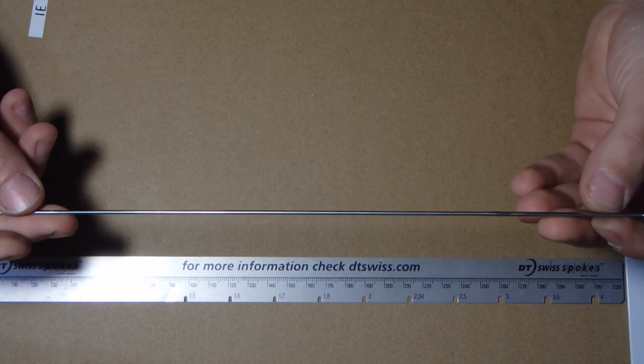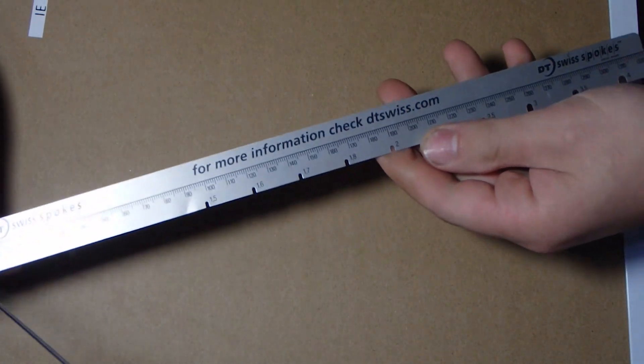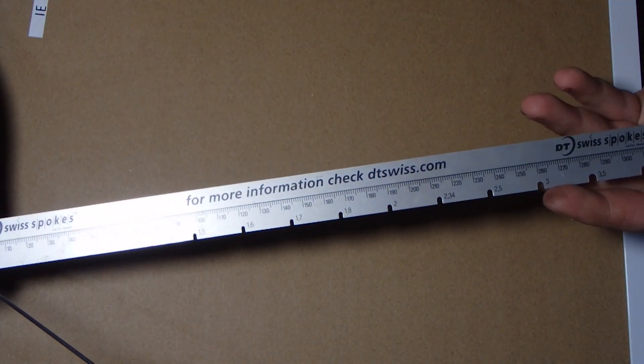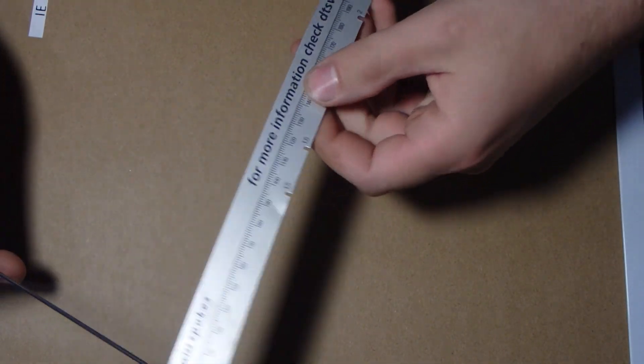So to measure the spoke, the first thing you need is a spoke ruler. This is a DT Swiss, which is quite a nice quality spoke ruler.